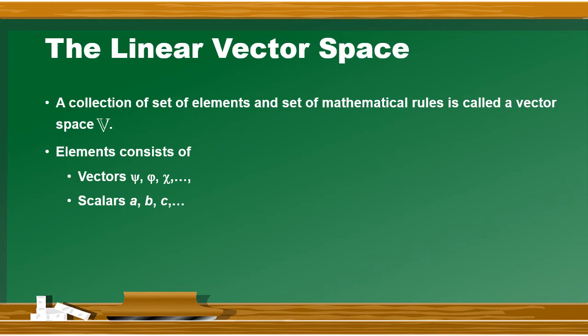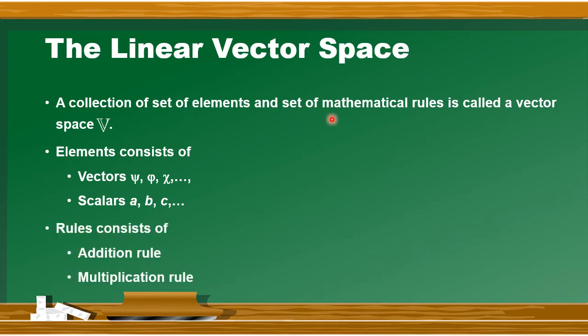जो दूसरी बात यहां पर की है कि एक set होगा mathematical rules का. अब mathematical rules कौन से होंगे? इसमें भी दो ही rules होंगे - एक होगा addition rule और दूसरा होगा multiplication rule. तो next हम देखते हैं कि addition rule और multiplication rules क्या हैं और इसको examples के through elaborate करते हैं.